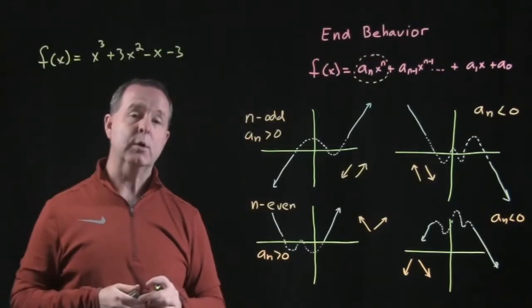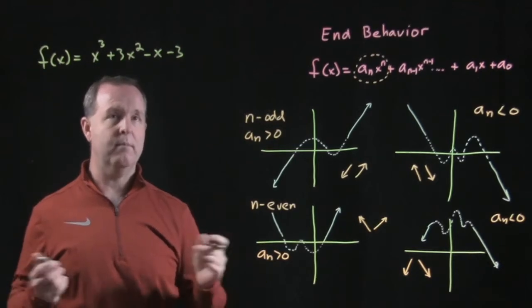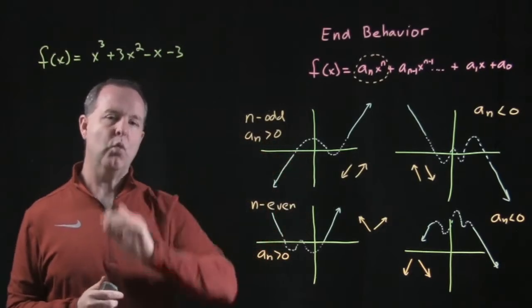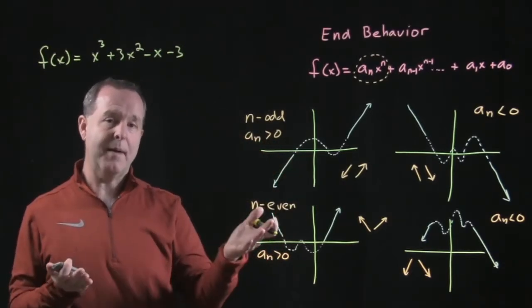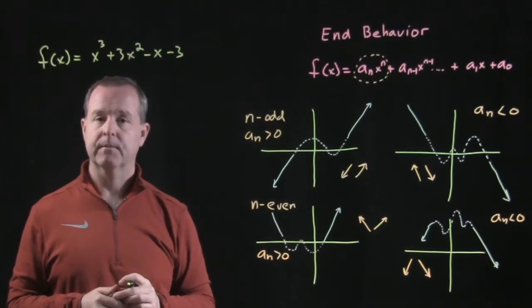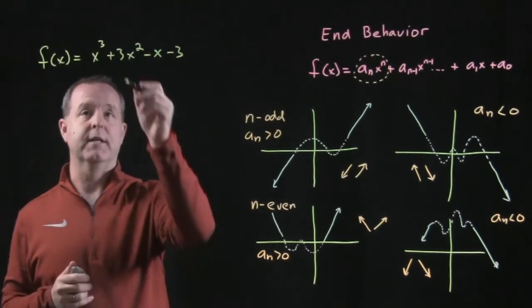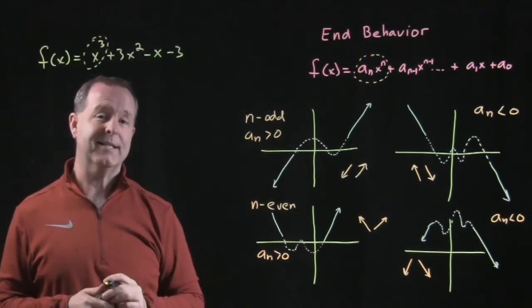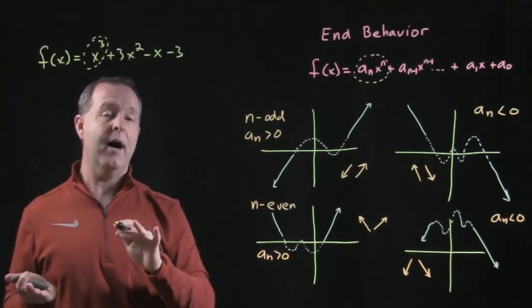F of x equals x cubed plus 3x squared minus x minus 3. Of these four opportunities here, which one does this graph represent as far as its end behavior is concerned? So we look at the leading coefficient. In this case it's x cubed. Cubed is an odd number.